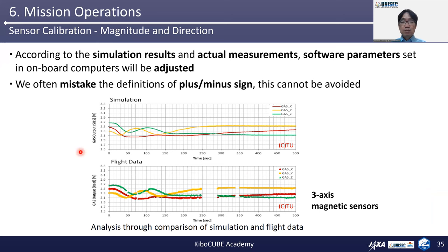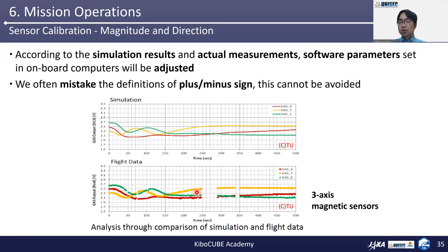This is an example of simulation data for a magnetic sensor — the upper one is simulation, the lower one is flight data. We often mistake the definition of plus and minus signs, and these kinds of mistakes cannot be excluded. You must prepare the update function for every parameter, every alignment matrix, and every control gain, etc. Sometimes every data and attitude control result looks correct only in the data, but after taking an image, we can notice a complete misunderstanding of the direction — the target cannot be included in the photo. So it's better to use actual image data for sensor calibration.